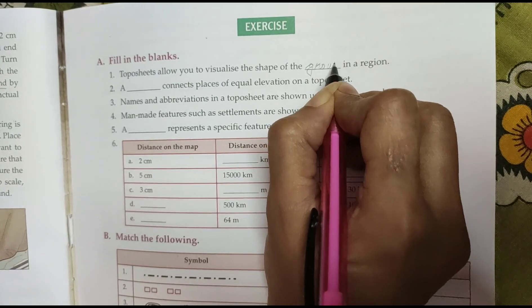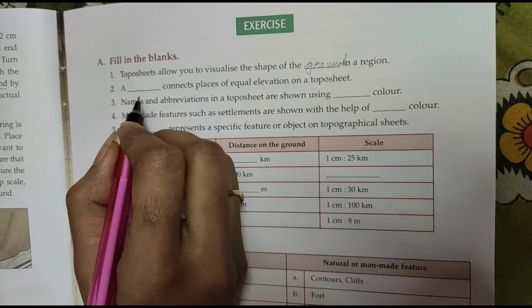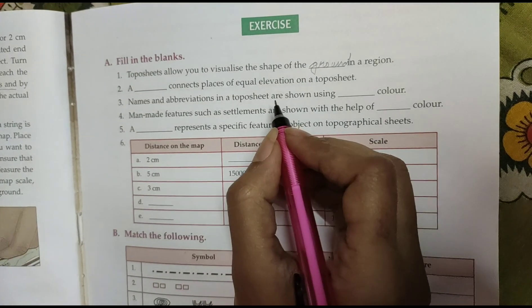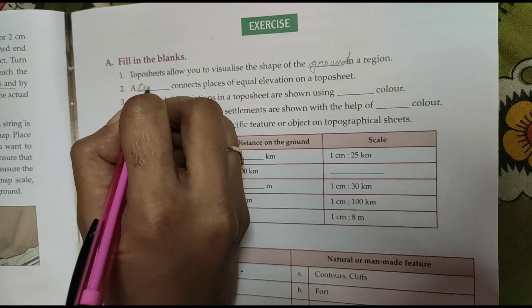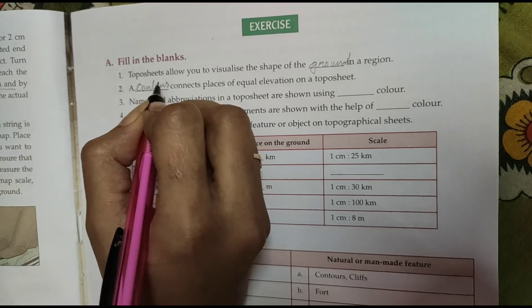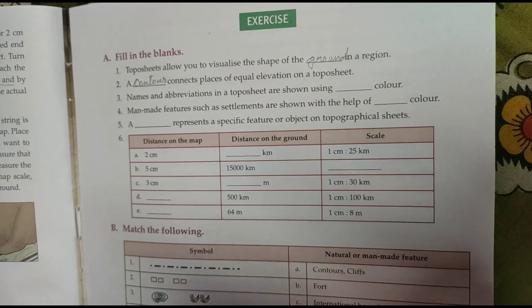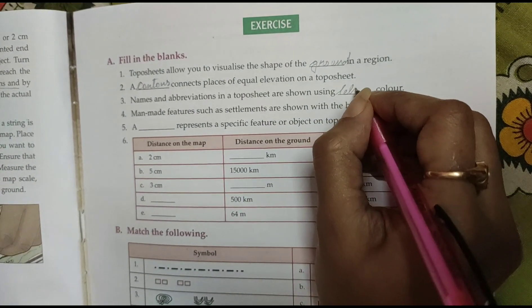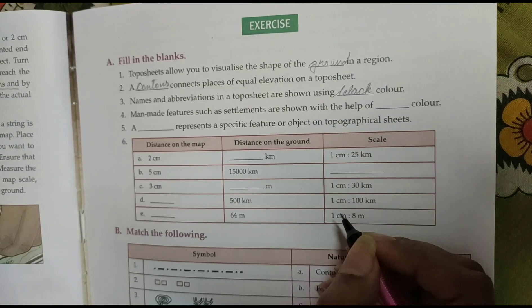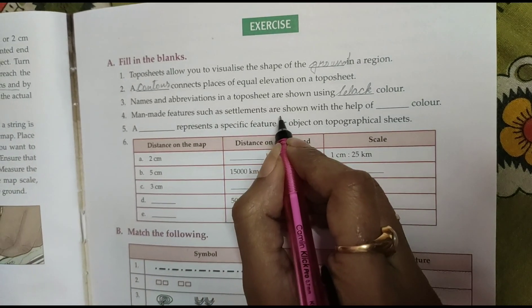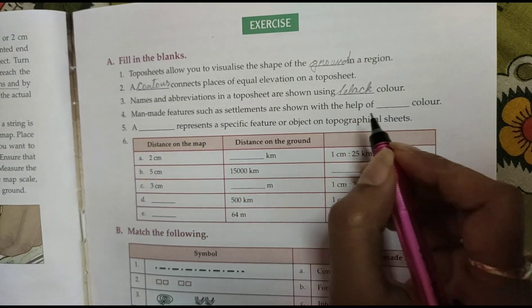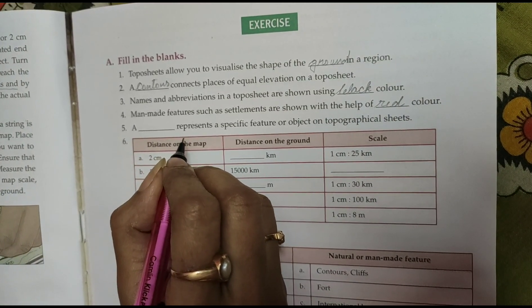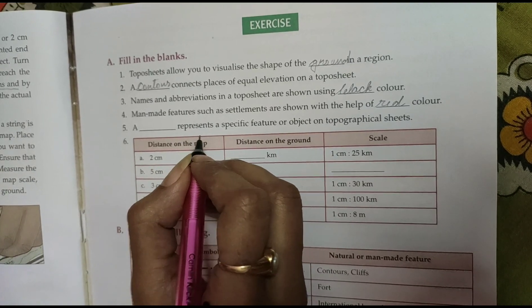Toposheet allows you to visualize the shape of the ground in the region. A contour connects places of equal elevation on a toposheet. Names and abbreviations in the toposheet are shown using color black. Man-made features such as settlements are shown with the help of color red. A symbol represents a specific feature or objects on toposheet map.